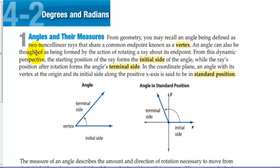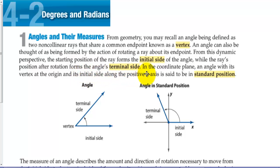An angle can also be thought of as being formed by the action of rotating a ray about its endpoint. From this dynamic perspective, the starting position of the ray forms the initial side. In standard position, the ray's position after rotation forms the angle's terminal side. In the coordinate plane, an angle with its vertex at the origin and its initial side along the positive x-axis is said to be in standard position.